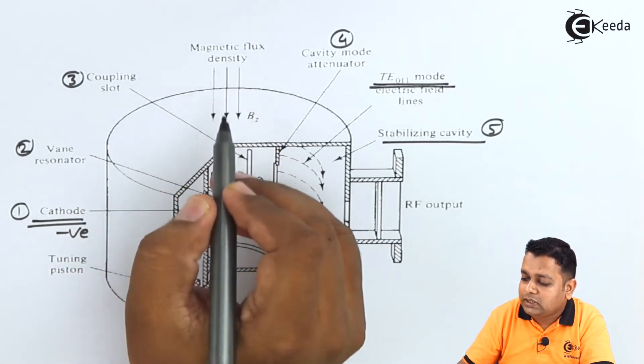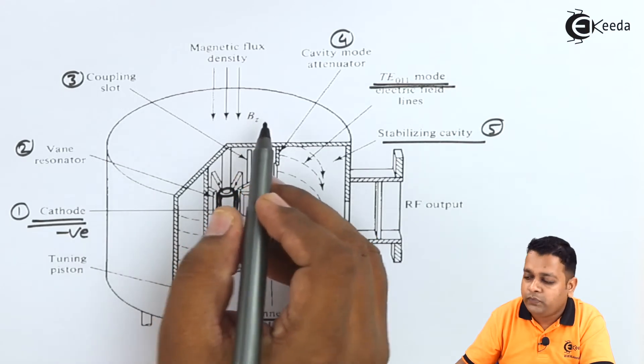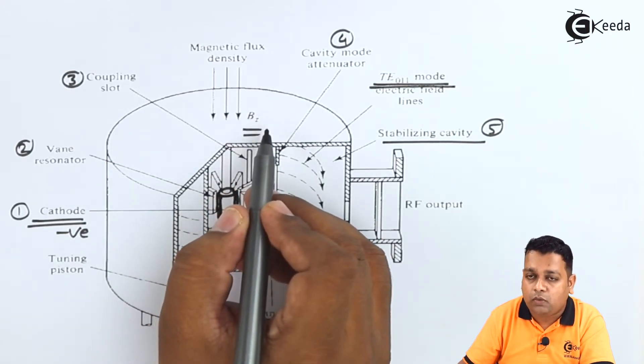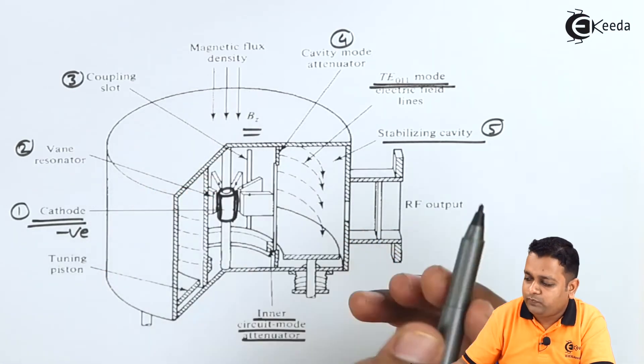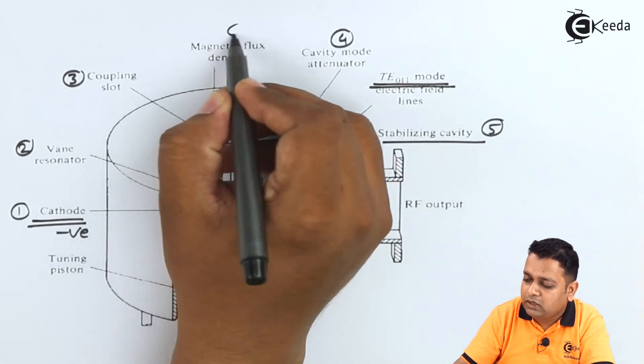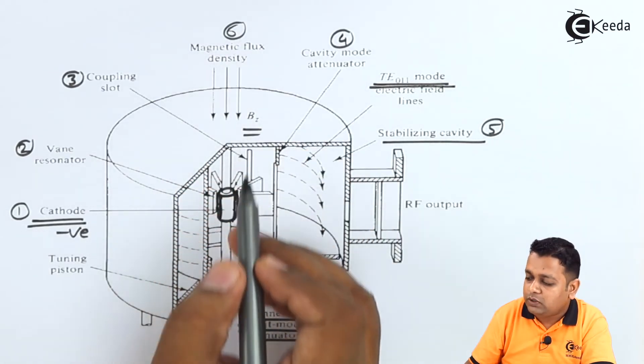we have the presence of magnetic field that is perpendicular to the electric field in between these two electrodes. So this is the magnetic flux density that is shown perpendicular. So here we have denoted BZ component, Z to be the direction of flow of magnetic flux lines.